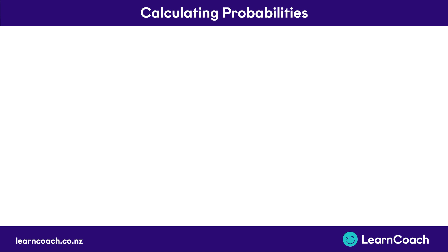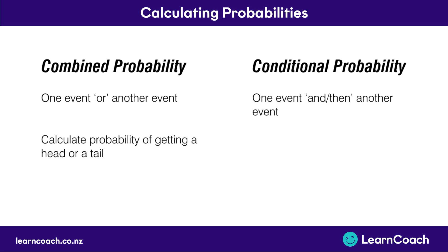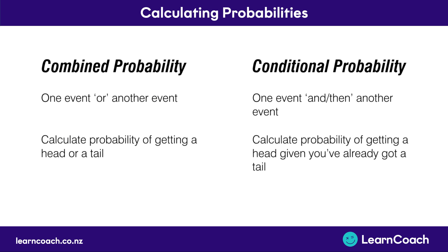In this video, we're going to learn to calculate two types of probability: combined probability and conditional probability. Combined is when there's one event or another event — a common question might be calculate the probability of getting a head or a tail. Whereas conditional is one event and then another event — a common question might be calculate the probability of getting a head given you've already got a tail.